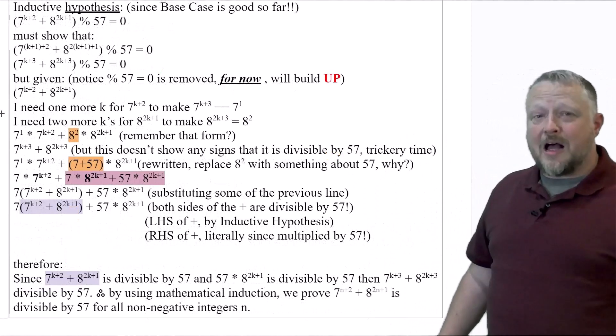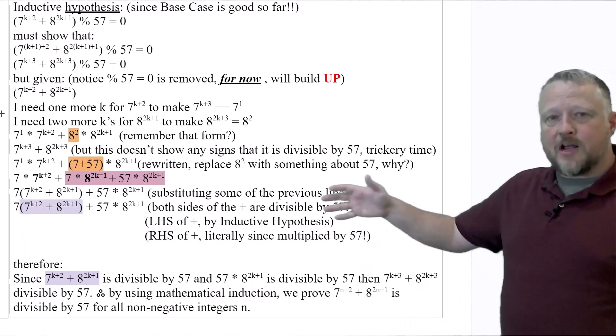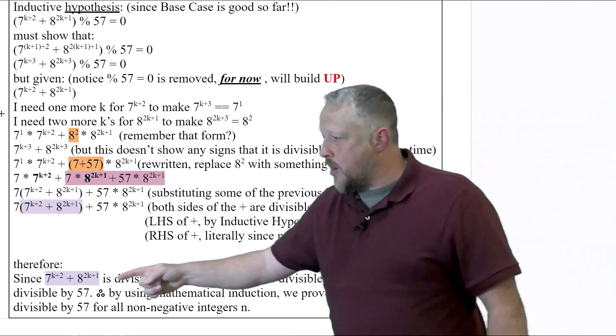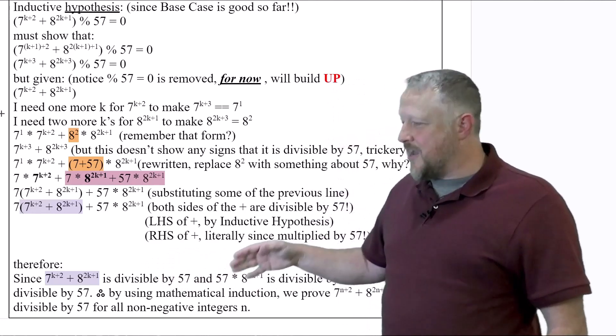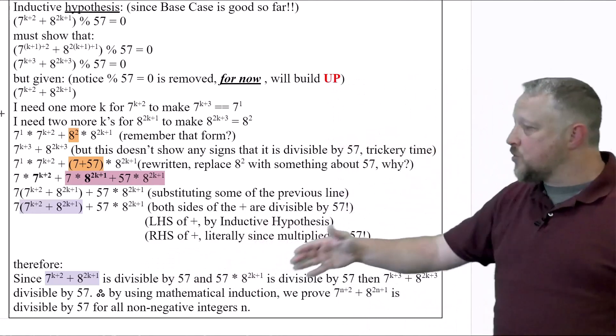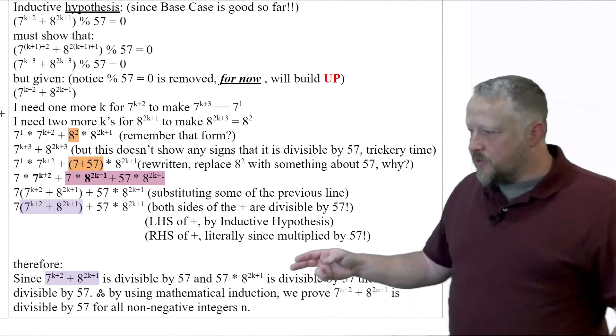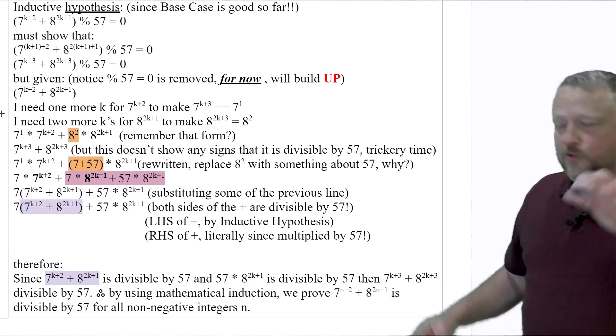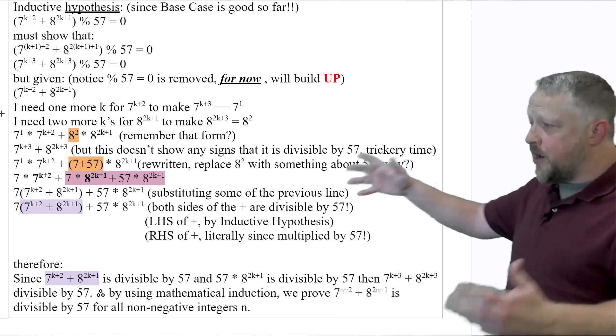I almost forgot. The therefore part, this is basically what I just explained, is that both parts are divisible by 57. The first part, we did that in our base case, divisible by 57, and then the 57 times whatever it would have been is divisible by 57. So that makes that whole entire equation divisible by 57. Use an induction, we prove that, and then that's the rest of the language that you need for the therefore. So finally, we are done that problem. Let's go to our next one. It's going to look very similar.